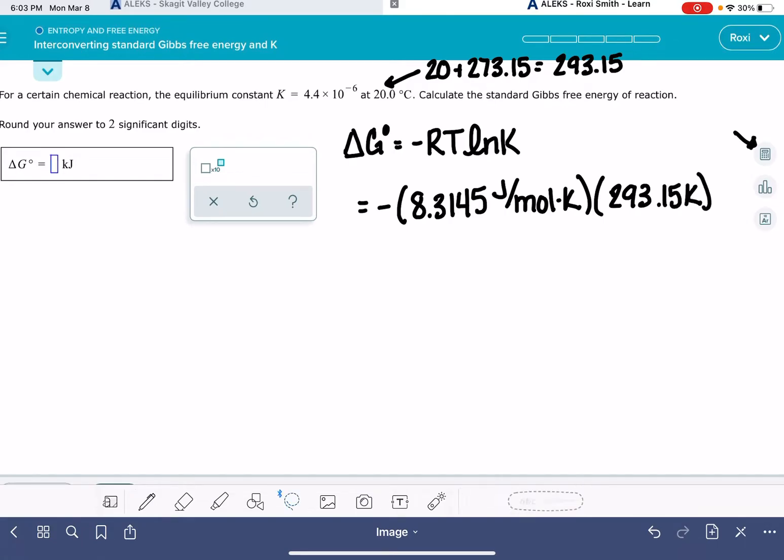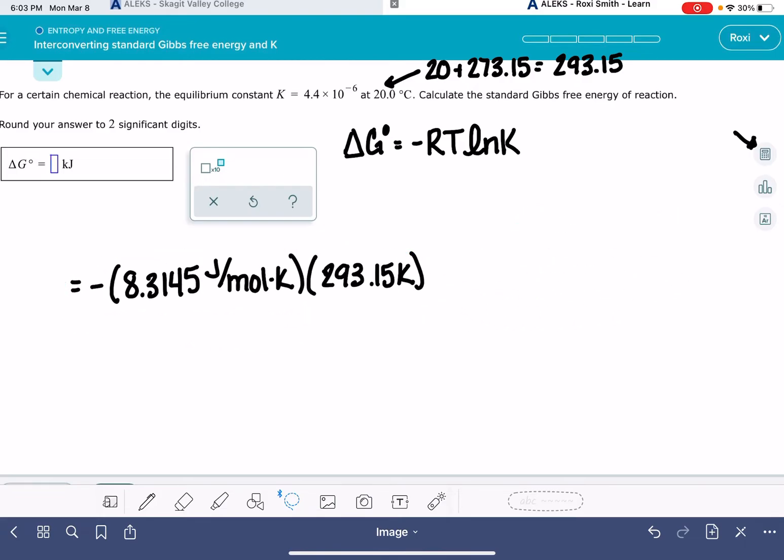And then the last thing we need in here is the natural log of the equilibrium constant. And the equilibrium constant has been given to us as 4.4 times 10 to the minus 6.